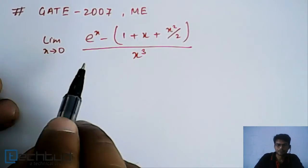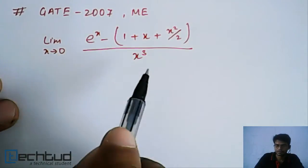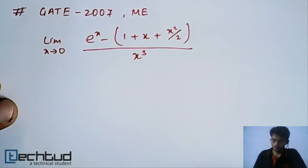Here we have given limit x tends to 0, e to the power x minus this expression upon x cubed. So how do we solve it?